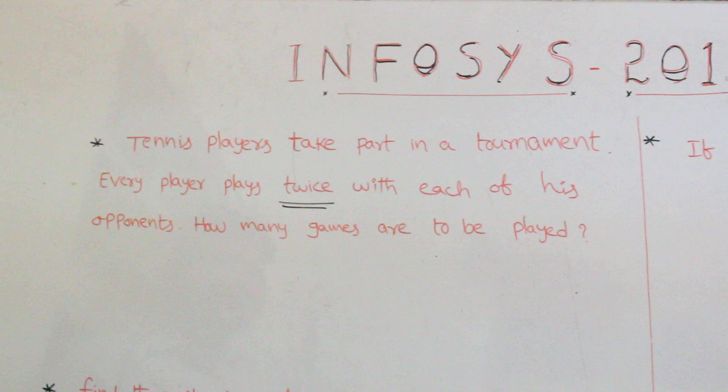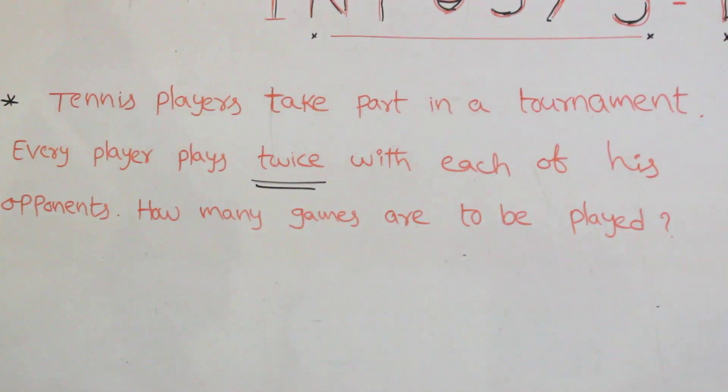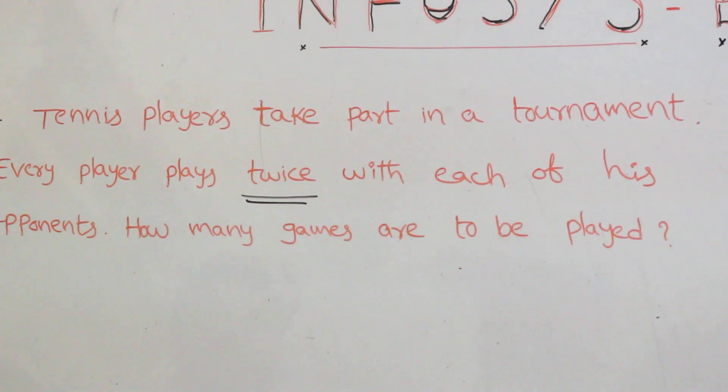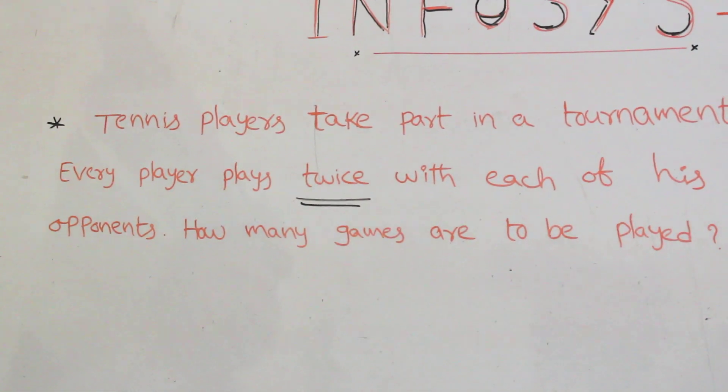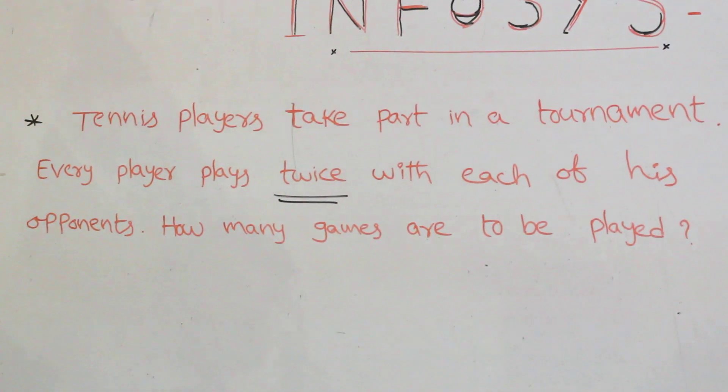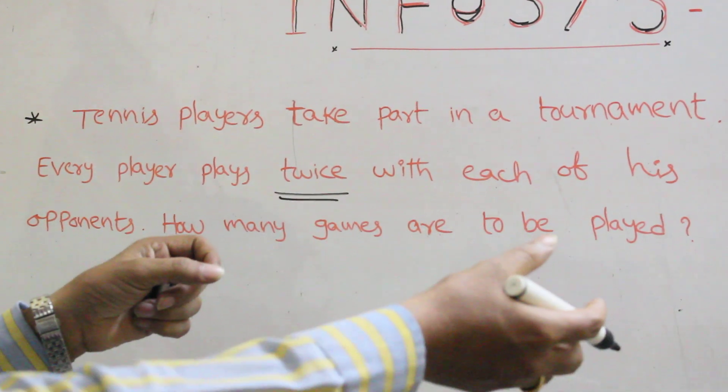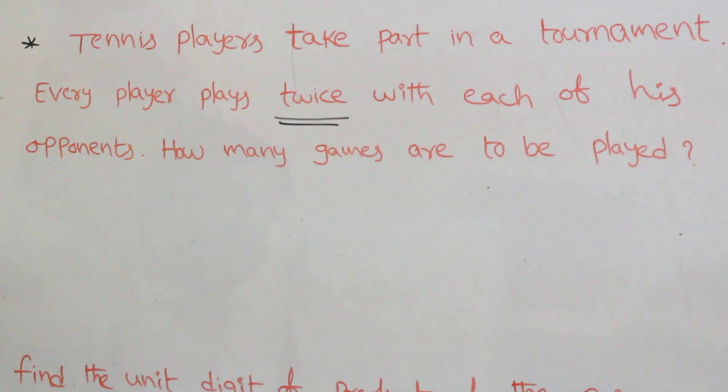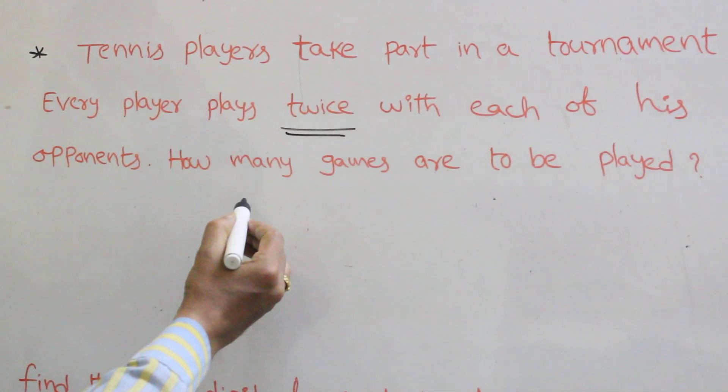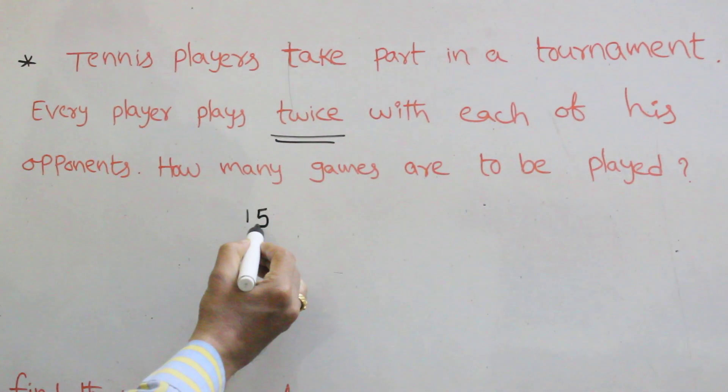Tennis players take part in a tournament. Every player plays twice with each of his opponents. How many games are to be played? Every player is paired with the opponent, like two combinations will be there. How many players are there? Fifteen players in the tournament.